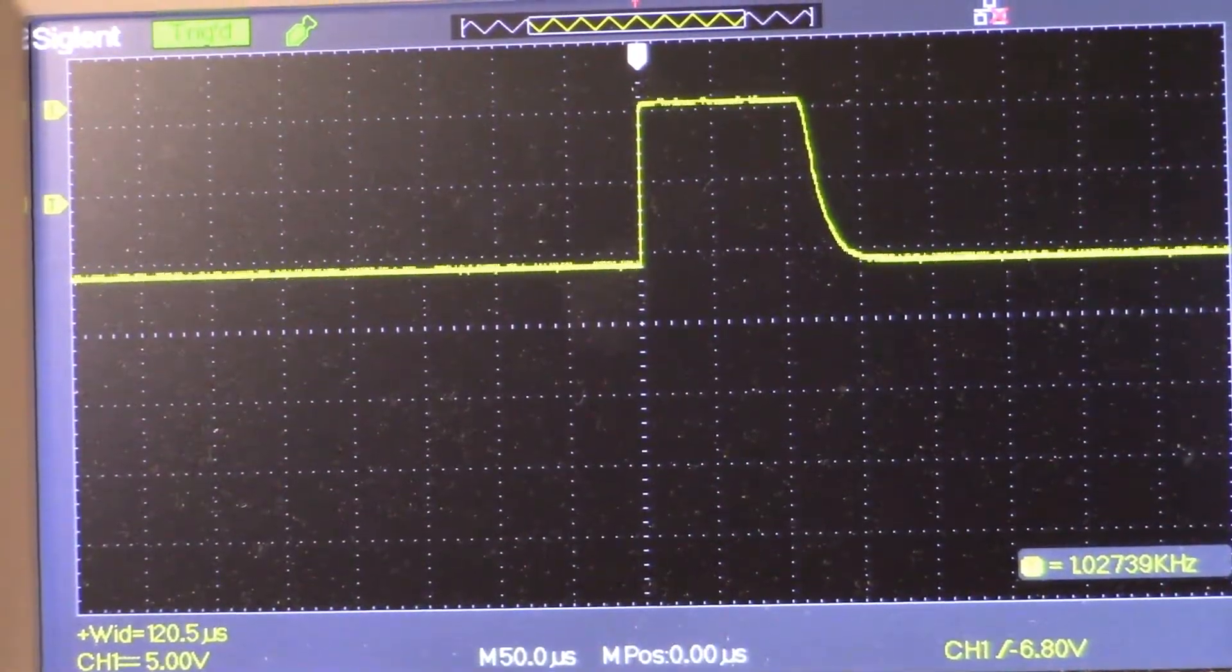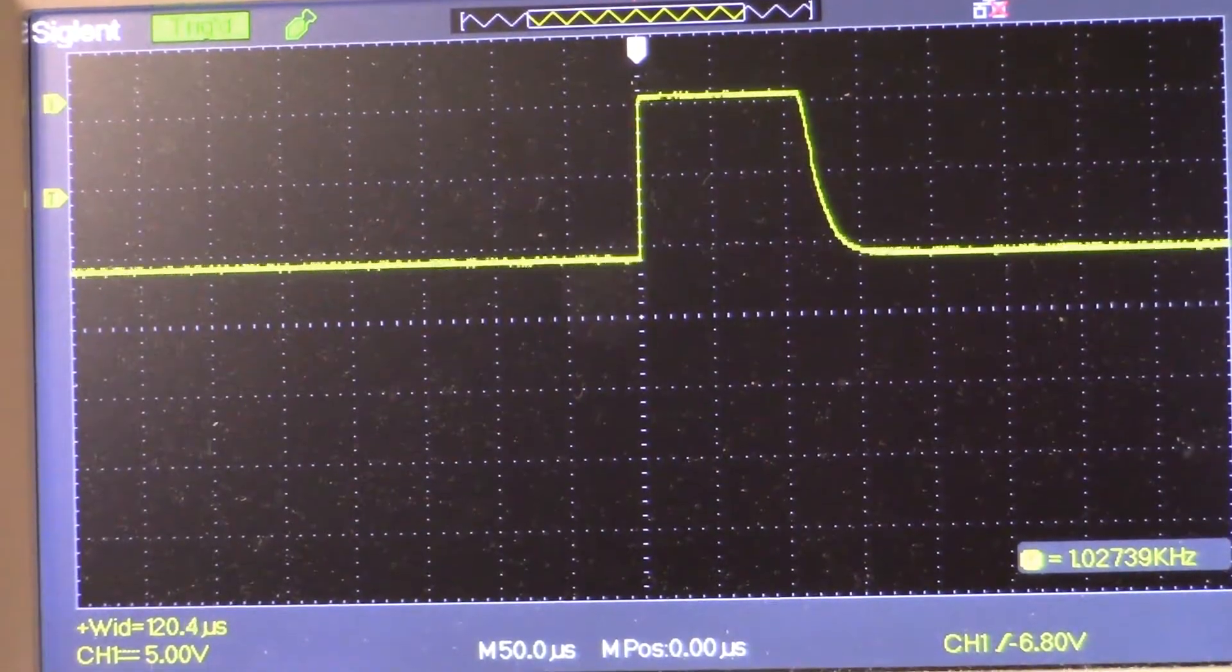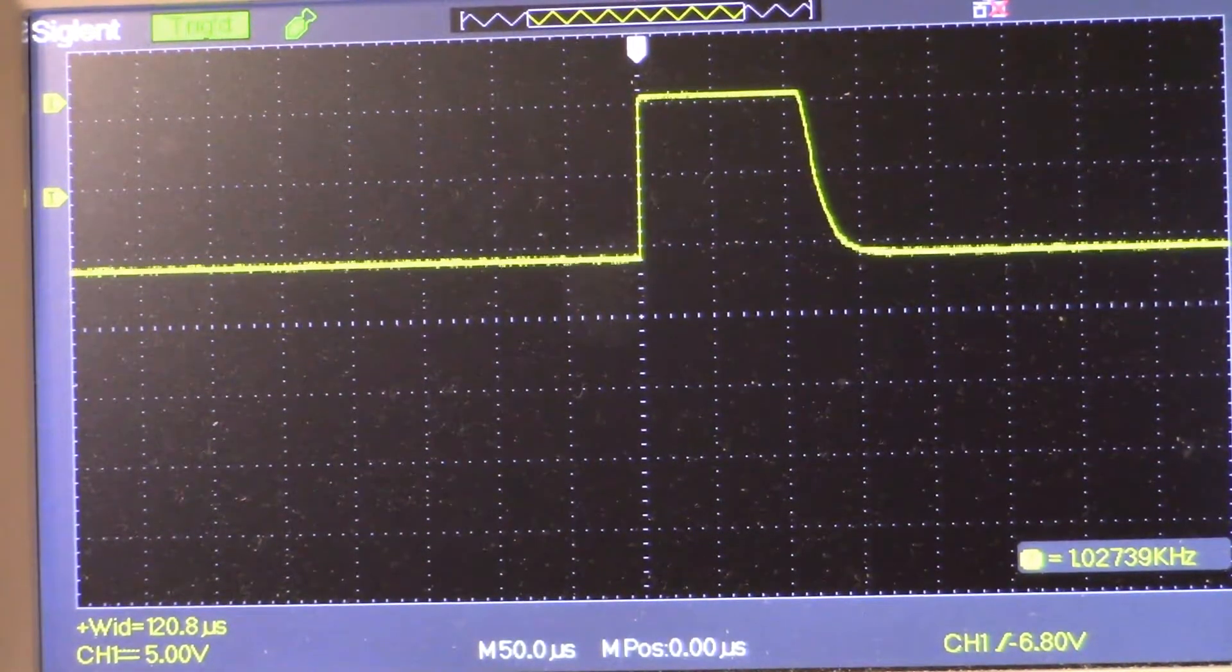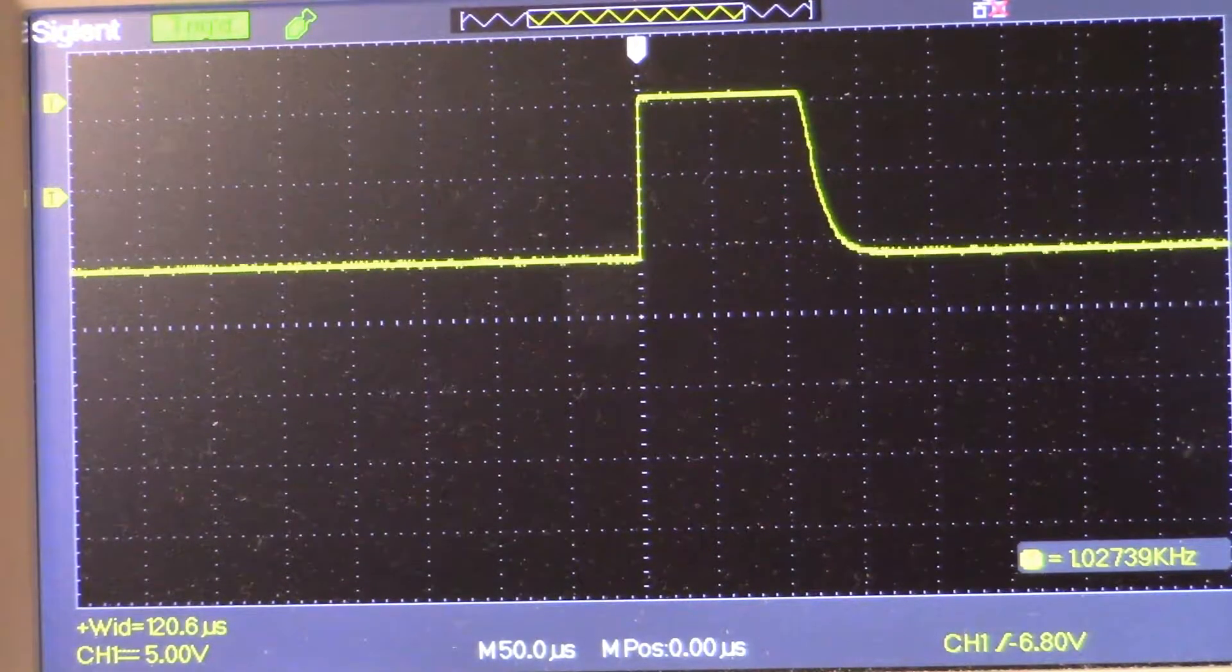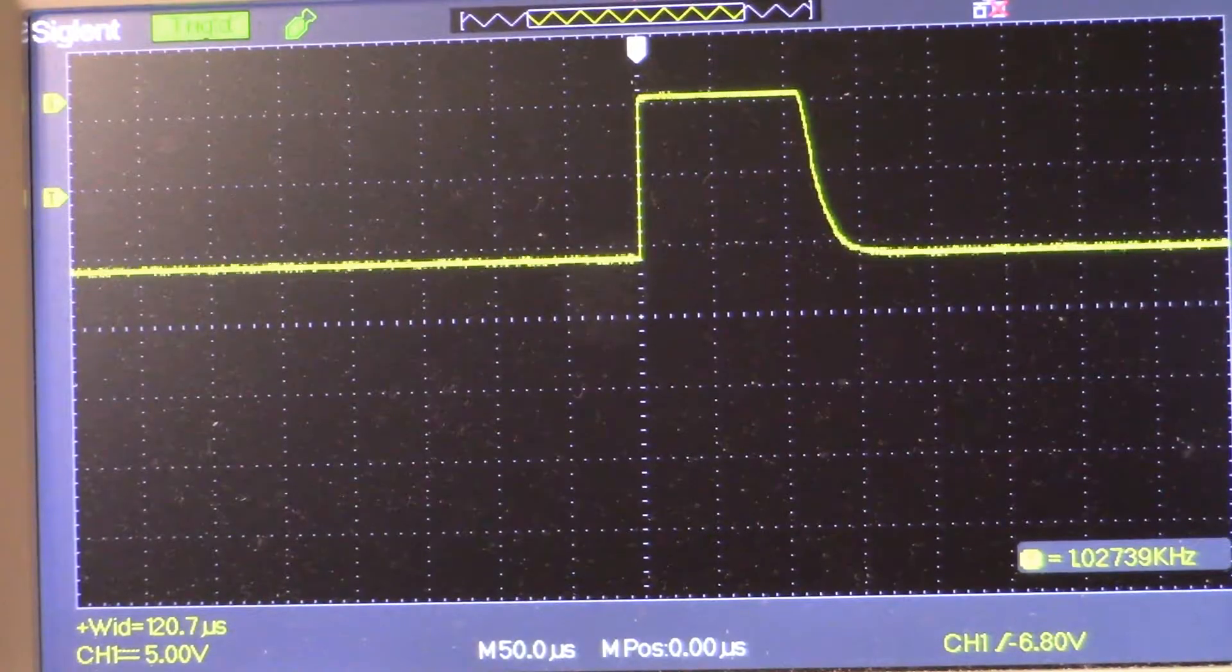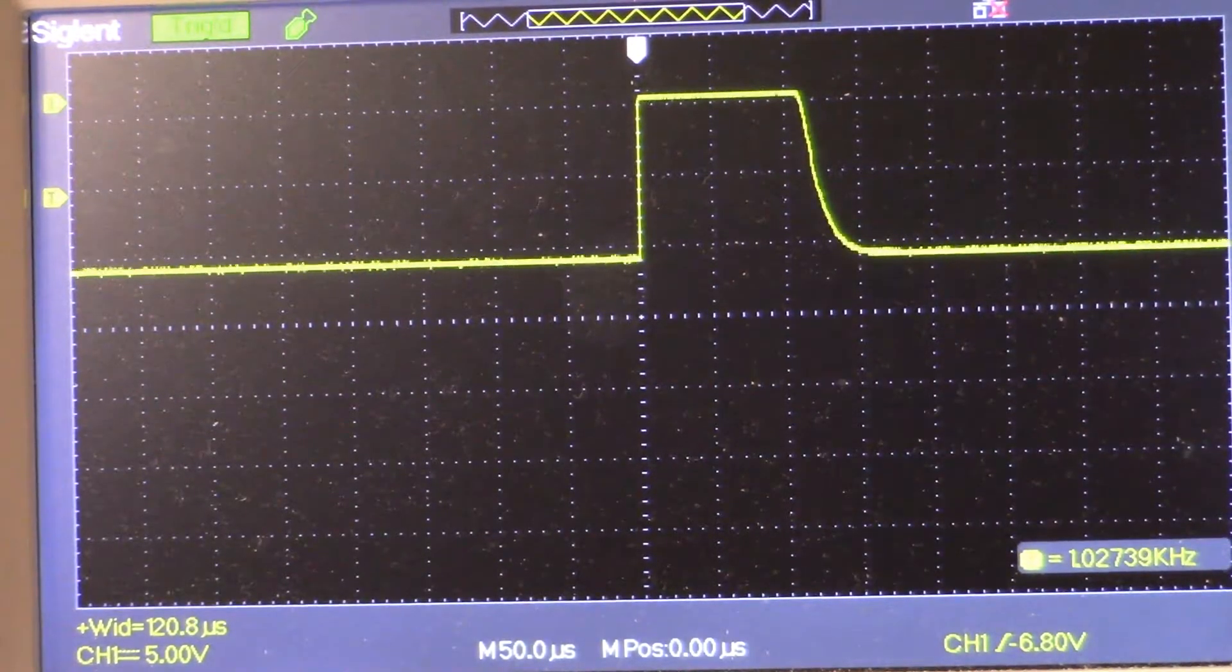Okay, so what we're looking at here on the oscilloscope is the gate of the MOSFET. And I'll show you what that looks like on the printed circuit board, how I have the connection.